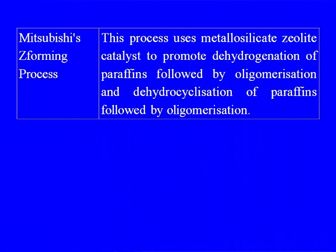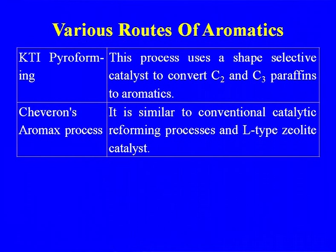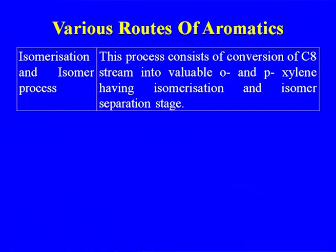The Jet Forming process uses metallosilicate zeolite catalyst to promote dehydrogenation of paraffins followed by elongation and dehydrocyclization. The KTI Pyroforming process uses a shape-selective catalyst to convert C2 and C3 paraffins to aromatics. The Chevron Aromax process is similar to conventional catalytic reforming and uses an L-type zeolite catalyst. The isomerization process is also an integral part of the para-xylene process, converting C8 streams into valuable ortho- and para-xylene with both isomerization and isomer separation stages.